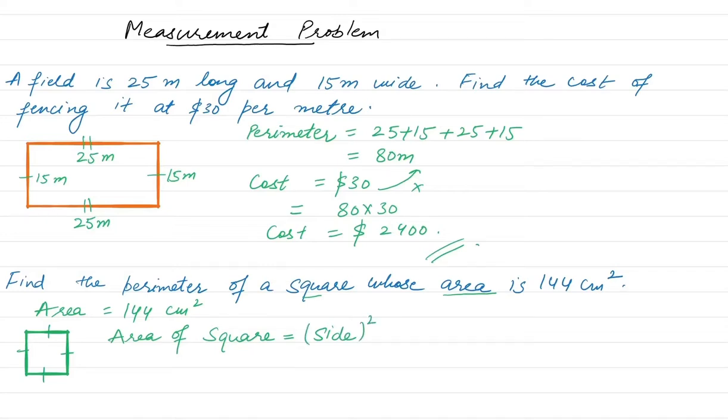Now side square, we need to find the side because area is already given to us which is 144 and this is equal to side square. So if something is square on one side of the equal sign, it will become under root when moved to the other side. So 144 will come under root, or we can say it comes to the power of half, which is equal to side.